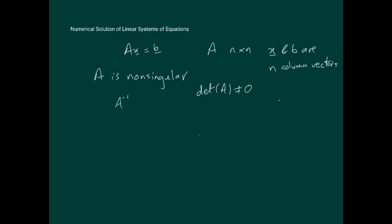It also means, of course, that A inverse exists. So we're going to be assuming that A inverse exists. So A is non-singular means its inverse exists. So we should have no issues, for instance, writing the system as x equals A inverse b.